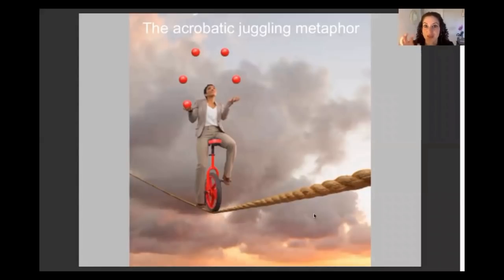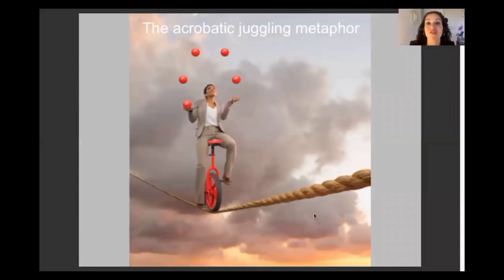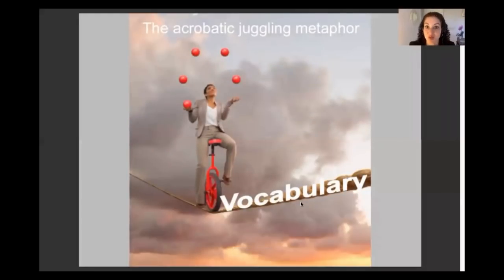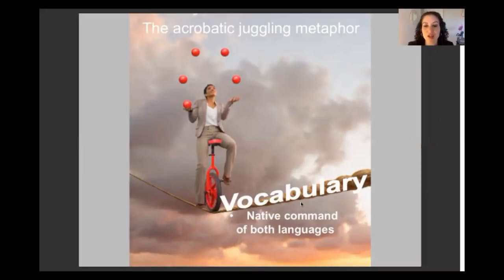The only way to master a complex task like that is to divide and conquer — first learn how to be on the tightrope, then add the motorcycle, then add the juggling. If you try to do them all at once it's virtually impossible. That's the same with interpretation, which is why we divide it into three steps. The first step is to learn the vocabulary so you have native command of both languages.